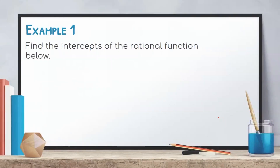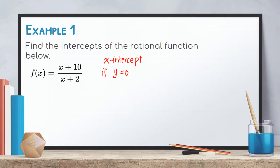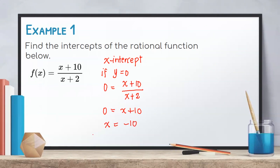Let us take this example. Find the intercepts of the rational function: f(x) = (x + 10) / (x + 2). To find the x-intercept, we set y = 0. Substituting, we get 0 = (x + 10) / (x + 2). Cross-multiplying gives 0 = x + 10, so x = -10. Therefore, the x-intercept of the rational function is -10.